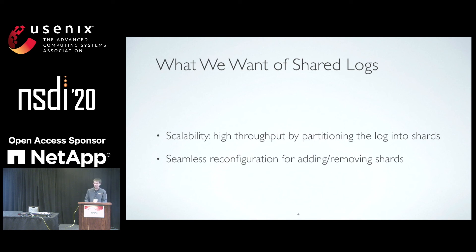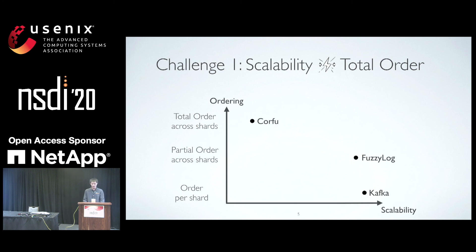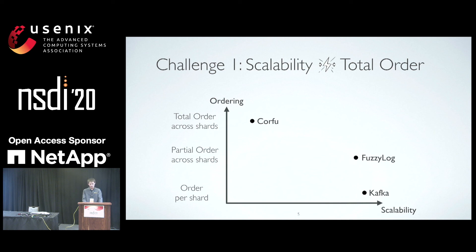Designing a log service faces two challenges. The first is that maintaining total order becomes expensive as the size of the log increases. In response, existing log services sacrifice either scalability or ordering guarantees. Log implementations are represented as dots in a graph — higher on the y-axis means stronger ordering guarantees, and more to the right on the x-axis means more scalable. Corfu, at the top left, guarantees total order but becomes temporarily unavailable when shards are added or removed. It achieves at most 570,000 writes per second, which falls short of today's most demanding systems.